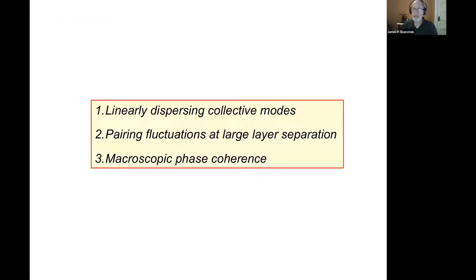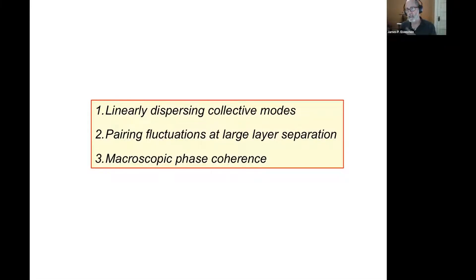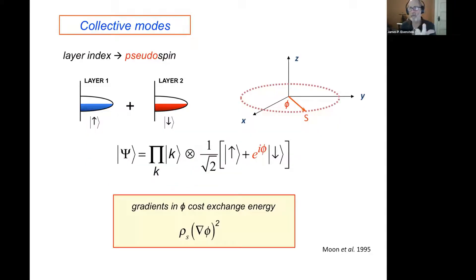Here's why it's worth doing. I'm going to talk about three things: three examples of what you learn from the tunnel spectrum that you cannot learn from transport measurements. Topic number one: collective modes. This is a superfluid, presumably with broken U(1) symmetry, so there should be a Goldstone mode. In the ferromagnetism language for this system, electrons lose their memory of which layer they're in, and they all do so with the same arbitrary phase φ in pseudospin space.